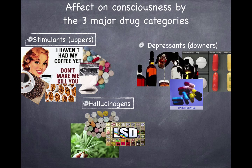When we look at the effects on consciousness, there are three major drug categories. Stimulants, or uppers — caffeine, nicotine, amphetamines, and cocaine — affect mood, perception, and thought. Depressants, or downers — alcohol, barbiturates, and narcotics. And hallucinogens — LSD, ecstasy, and marijuana.